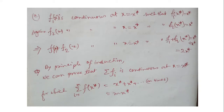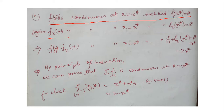Since f₁ is continuous, from the first problem there exists x* such that f₁(x*) = x*. Obviously f₂ is also continuous, so there exists x* such that f₂(x*) = x*. Since f₁(x) and f₂(x) are both continuous, f₁(x) + f₂(x) is continuous — the sum of two continuous functions is also continuous. Adding the two equations gives f₁(x*) + f₂(x*) = 2x*.